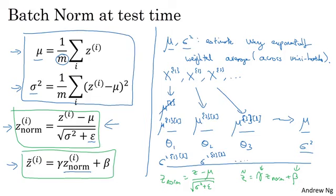So the way to do that is to estimate mu and sigma squared from your training set. And there are many ways to do that. You could, in theory, run your whole training set through your final network to get mu and sigma squared. But in practice,